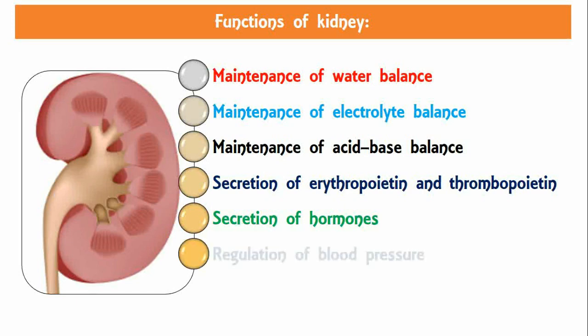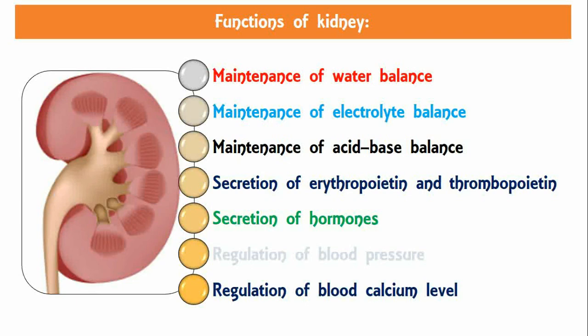Regulation of blood pressure: kidneys play an important role in the long-term regulation of arterial blood pressure by two ways — by regulating the volume of extracellular fluid and through the renin-angiotensin mechanism. Regulation of blood calcium level: kidneys regulate blood calcium by activating 1,25-dihydroxycholecalciferol into vitamin D, which is necessary for the absorption of calcium from the intestine.